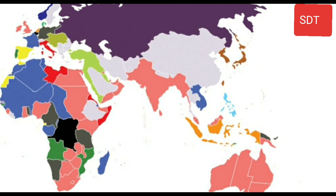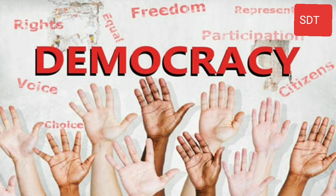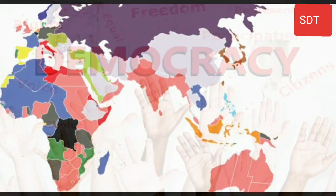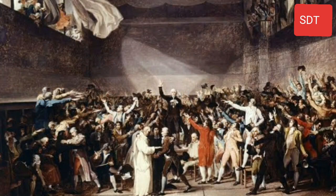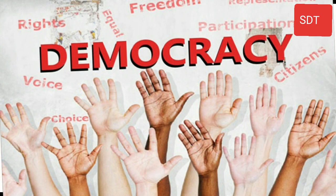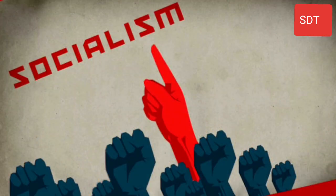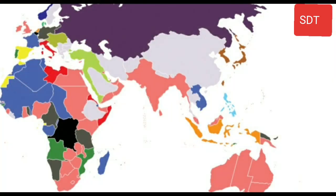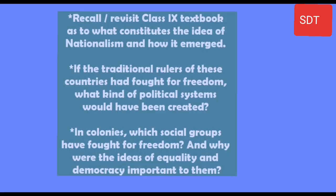The traditional rulers in almost all these countries had been kings and emperors. These emperors did not support the ideas of democracy and freedom. As new movements took shape, people in the colonies were inspired by new ideas from Europe like nationalism, democracy and even socialism. We will study the experience of some of these countries and compare them with our own.